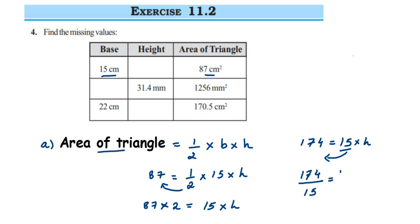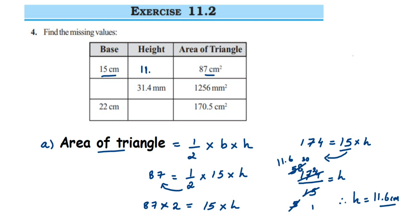Dividing 174 by 15 gives a decimal answer. Cancelling in the 3-times table: 3×5=15 reduces both, leaving 58 ÷ 5. Performing the division gives 11.6, with a remainder of 3, so after placing the decimal we get 11.6. Therefore, height = 11.6 cm, which we fill in the table.